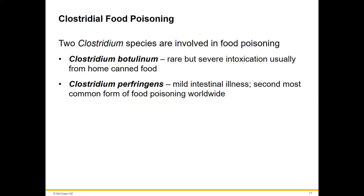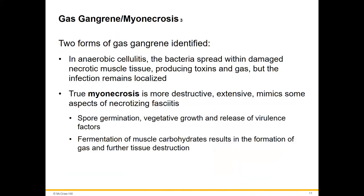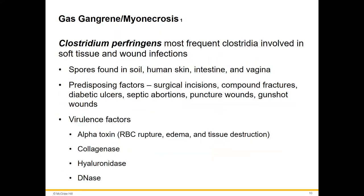Clostridium botulinum: rare, but intoxication typically comes from poorly home-canned food. This is your flaccid paralysis. Clostridium perfringens we already discussed, but it also causes a mild intestinal illness and is the second most common form of food poisoning worldwide.